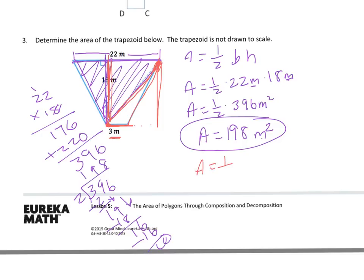So I have 3 and 18. So I'm going to do 1 half base times height again. And I have 1 half. My base is 3. And my height is 18. So 3 times 18. It's going to get me 54 meters squared. Because meters times meters.